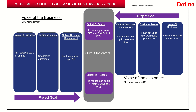The critical customer requirement was to reduce the part setup time to a minimum, giving the team a Critical to Quality (CTQ): to reduce the part setup from eight working days to two working days, decided by looking at three months of data. The Voice of the Business was that part setup is taking a lot of time, creating unsatisfied customers. The critical business requirement gave the team a Critical to Process (CTP), which mapped to the same CTQ.